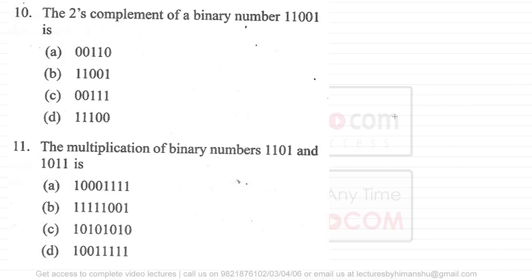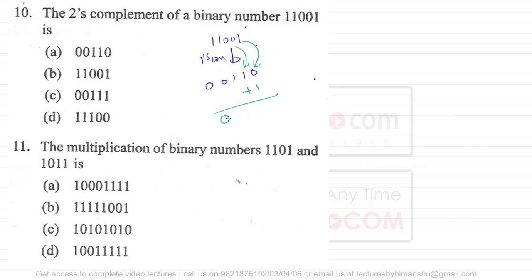Question ten asks for the 2's complement of the binary number 11001. First, find the 1's complement by inverting each bit: 11001 becomes 00110. Then add 1: 00110 + 1 = 00111. So the 2's complement is 00111, and the answer is option C. In the next video we'll cover questions 11 through 20.